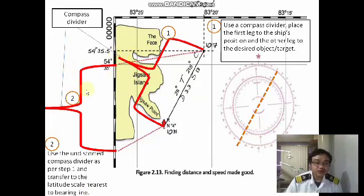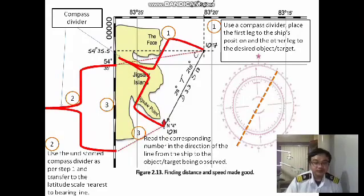Please assume that these two red shapes here are the compass divider. Then the last step would be to read the corresponding number in the direction of the line from the ship to the object or target being observed. Now this is quite challenging because we have the four types of the chart according to its scale. It is quite challenging to read.